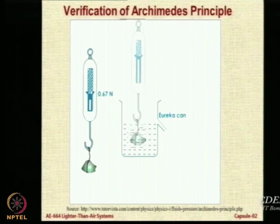You submerge the stone inside the Eureka can — some fluid spills, and the spring balance reading changes from 0.67 to 0.40. Assuming no other forces act on the stone, the buoyancy force is the difference between the two readings, which is 0.27 Newtons. To verify, you take a beaker on a weighing balance: the empty beaker reads 0.1 and with the spilled displaced water it reads 0.37, giving a difference of 0.27 — which matches exactly.